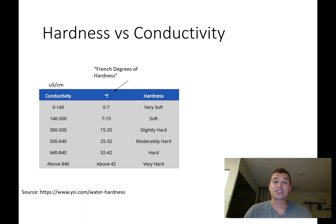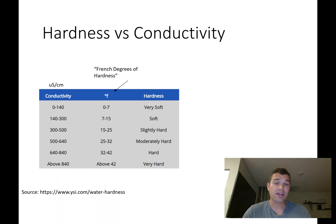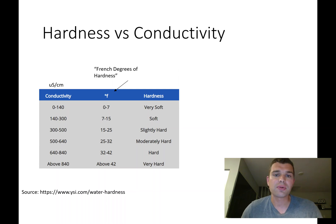There's no direct equation, but many people do try to put out correlations. Here's a table showing conductivity in micro Siemens per centimeter alongside hardness. They also included French degrees of hardness, which is another unit. Generally, conductivity will increase with the hardness of the water.